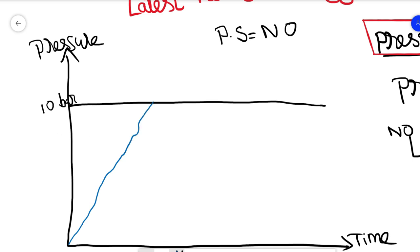During the gradual increment of pressure, the pressure switch doesn't sense any pressure and it remains in its original contact, NO contact, normally open contact. When the process pressure achieved 10 bar pressure, the pressure switch changes its contact to NC, that is normally close contact.